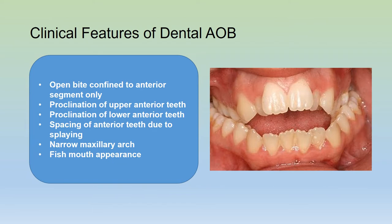What are the clinical features of a dental anterior open bite? Usually the open bite is confined to the anterior segment. The upper and lower teeth are both proclined with spacing between the anterior teeth due to splaying. The maxillary arch is commonly narrowed. All this gives rise to a fish mouth appearance.